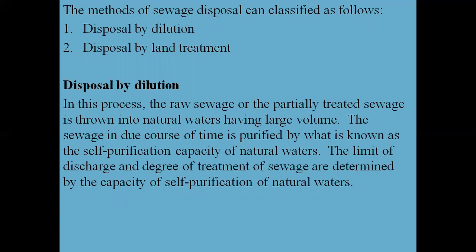The methods of sewage disposal can be classified as: first, disposal by dilution; and second, disposal by land treatment. Disposal by dilution is the process in which raw sewage or partially treated sewage is discharged into natural waters having large volumes. The sewage is then purified by what is known as the self-purification capacity of natural waters. The limit of discharge and degree of treatment are determined by this self-purification capacity.